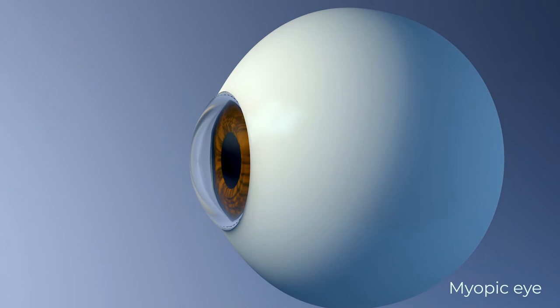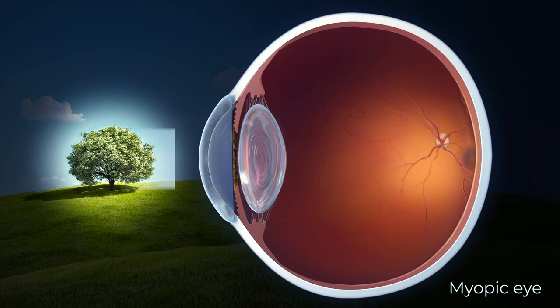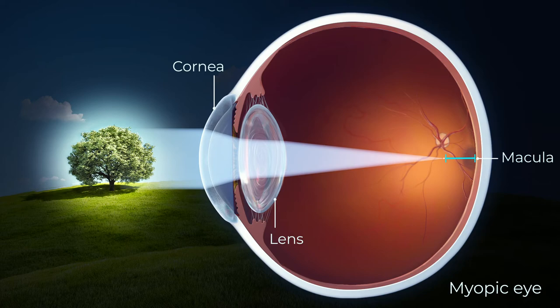In a nearsighted or myopic eye, light reflecting off a distant object is refracted by the cornea and the lens to focus at a point that falls short of the macula of the retina. This causes the object to appear blurry.